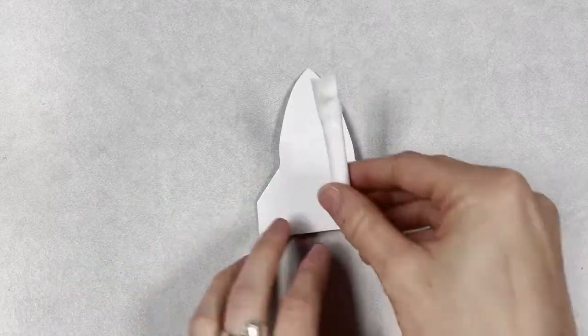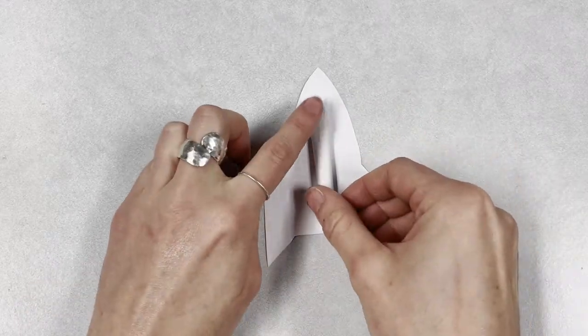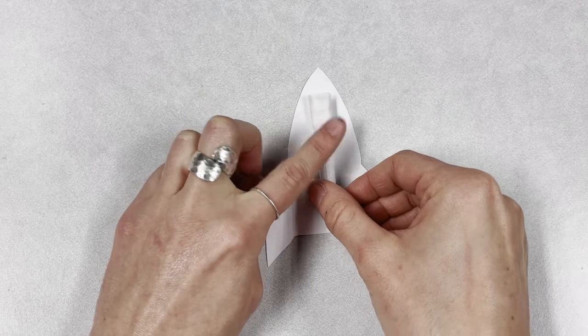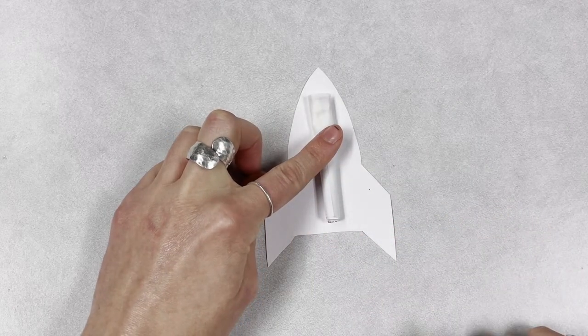Now you should have a tube with one open end and one end that has been taped closed. Now tape the tube to the back of the rocket with the closed end at the top of the rocket and the open end towards the bottom.